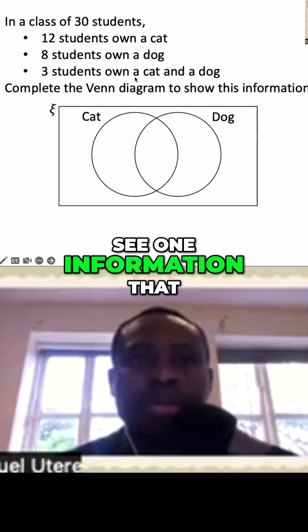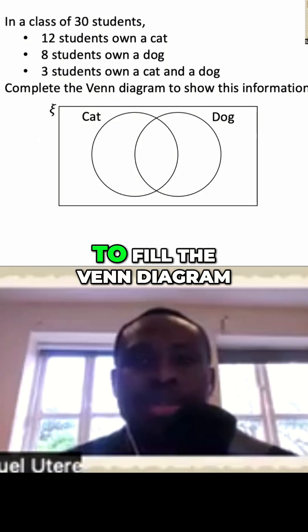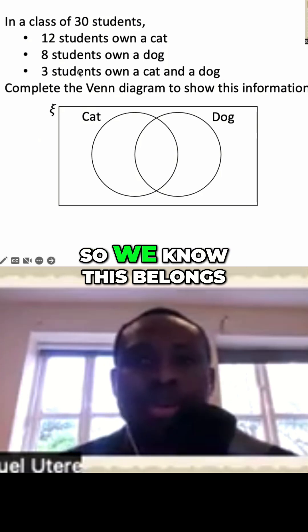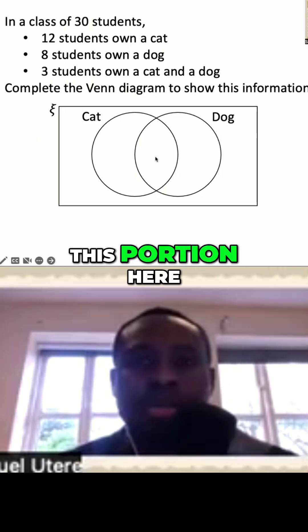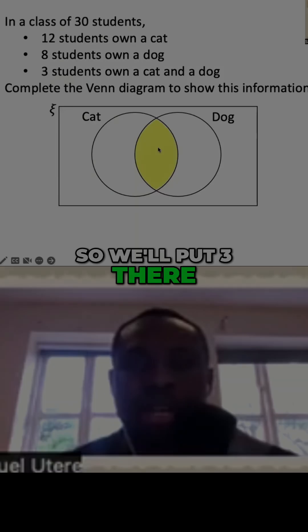So very quickly, we see one information that we can use and then using our knowledge of Venn diagram to fill the Venn diagram. So we know this belongs, this portion here is for those that own cat and dog. So we'll put three there.